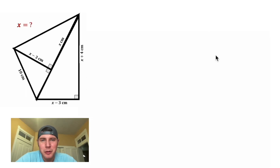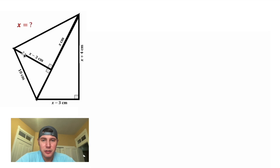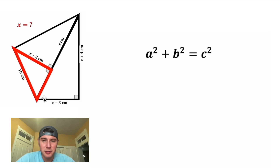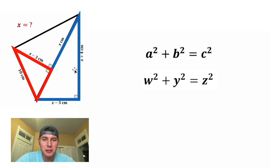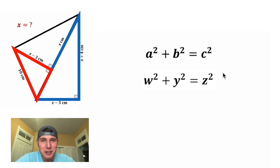Hey guys, I thought this was a fun problem — it was not. It is a long, tedious problem. So I thought if we look at this triangle, we can use the Pythagorean theorem to find out this piece, and after we have this, we can use the Pythagorean theorem to find out the rest, and then just solve for x. Well, this is the method to do it, but it takes a whole lot of work.